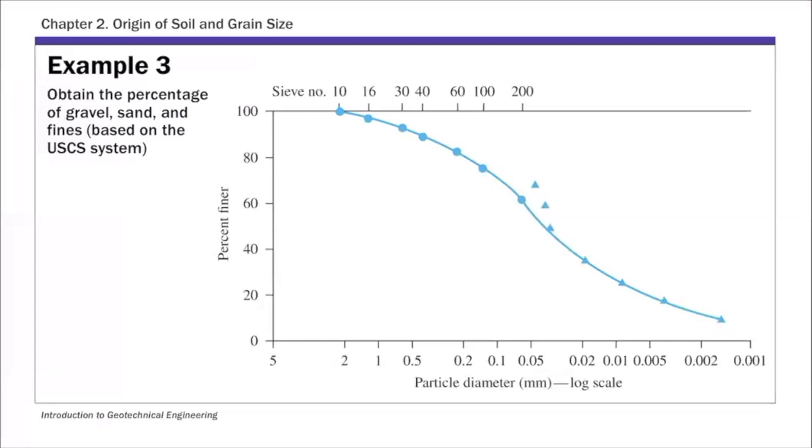This is an example I want to start today. This is again a particle size distribution curve, and the difference here is instead of calculating all these coefficients and d values, for this example we're going to obtain the percentage of gravel, sand, and fines based on the USCS system, the unified soil classification system.